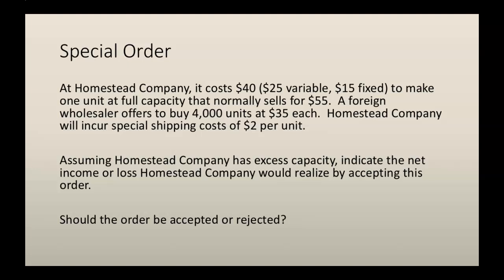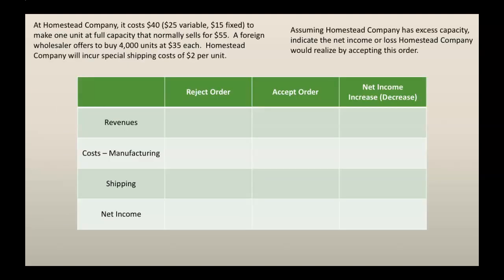We need to assume that Homestead Company has excess capacity, and we need to indicate the net income or loss that Homestead Company would realize by accepting this order, then make the decision of whether the order should be accepted or rejected. The first important piece is that Homestead Company has excess capacity. That means that if we reject the order, we wouldn't be getting other orders — no revenues, no variable manufacturing costs, no shipping costs, and no changes to our net income.